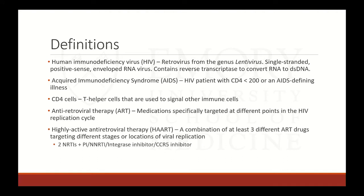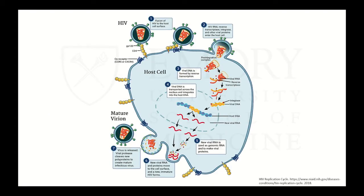Antiretroviral therapy, or ART, are medications specifically targeted at different points in the HIV replication cycle. HAART — highly active antiretroviral therapy — is a combination of three antiretroviral drugs. The most common regimens include two NRTIs plus either a protease inhibitor, an NNRTI, an integrase inhibitor, or a CCR5 or fusion inhibitor.